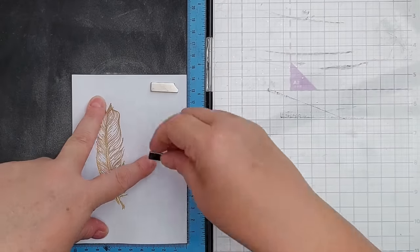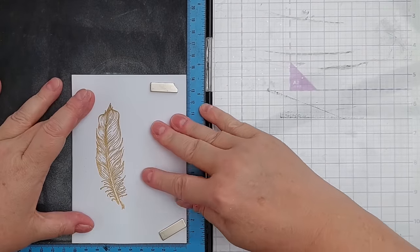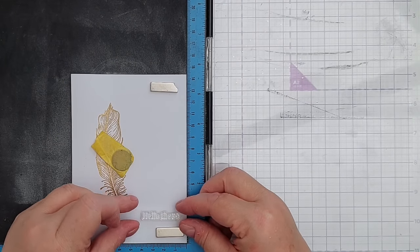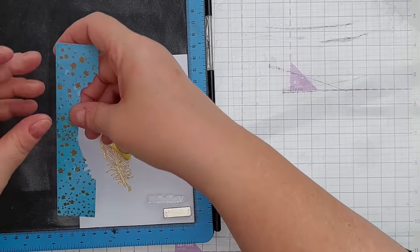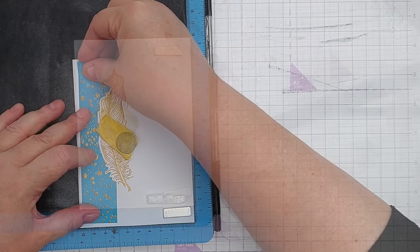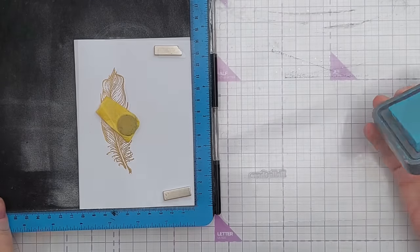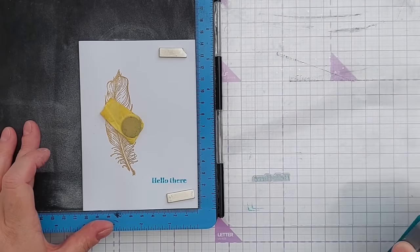So now it's cooled and set, I'm popping it back in my stamp positioner. The card is slightly warped but it'll flatten out later. And what I want to do is stamp on a sentiment and I've chosen the words 'hello there.' I'll pop this in just so I can see how everything's gonna look.